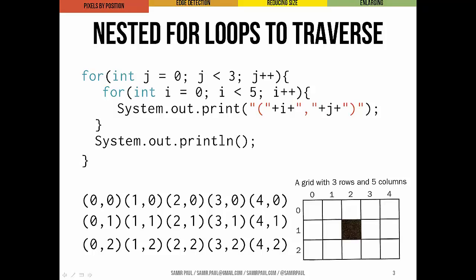When the outer loop traverses the y coordinates and the inner loop traverses the x coordinates, j is traversing y and i is traversing x. The printed output goes from 0,0 all the way to 4,2. This loop marches across the row in the grid, prints the coordinates at every column, then moves on to the next row. We call this a row major traversal.